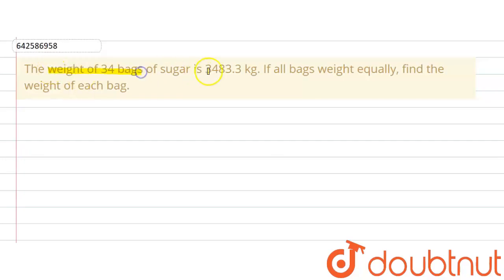The given question says that the weight of 34 bags of sugar is 3483.3 kg. If all bags weigh equally, find the weight of each bag. So we are given the weight of 34 bags.